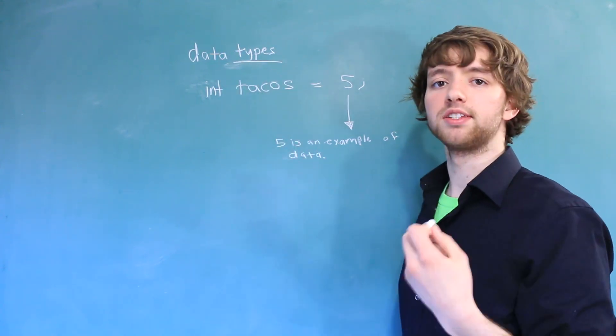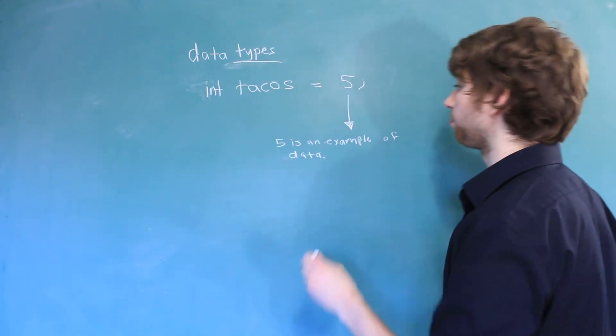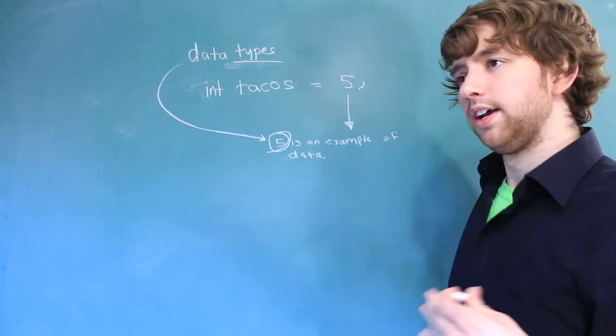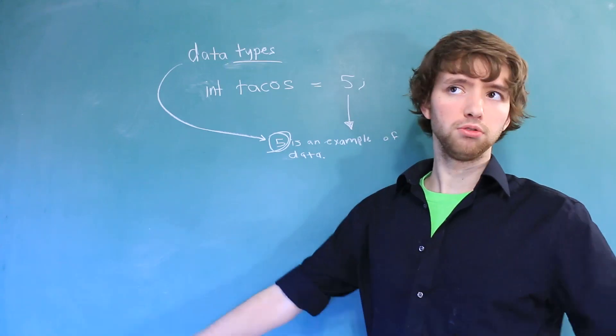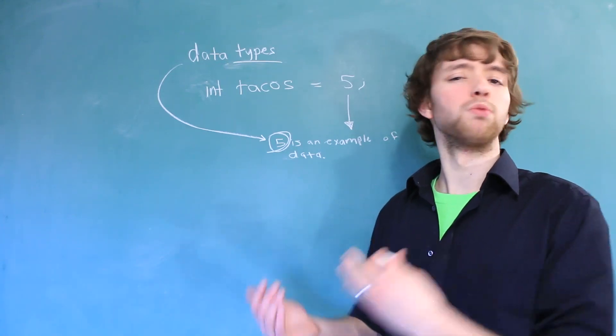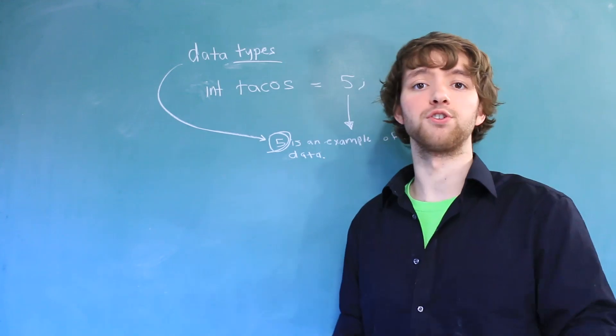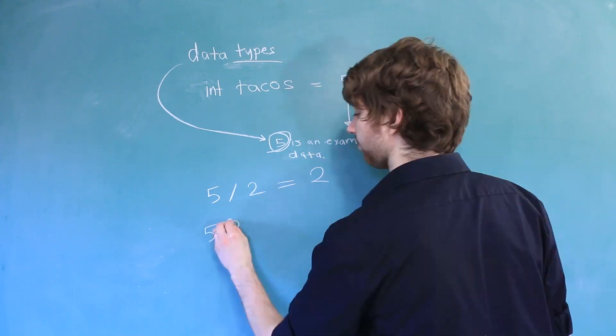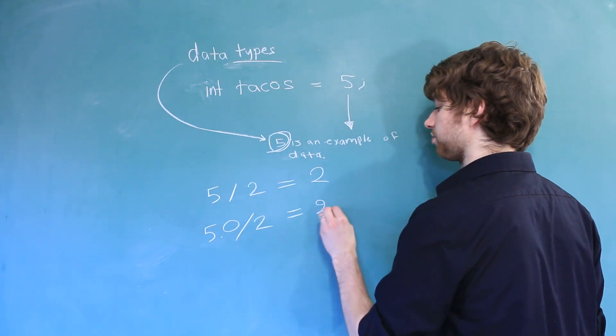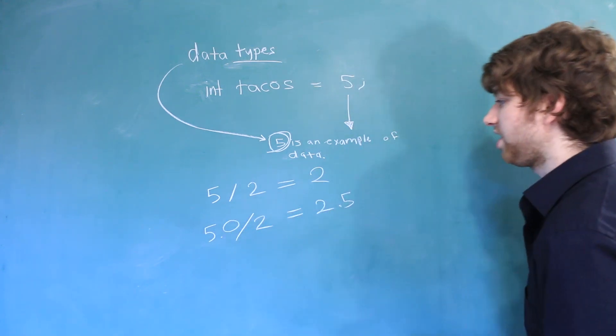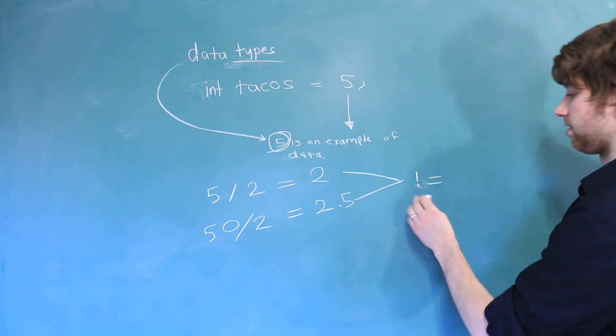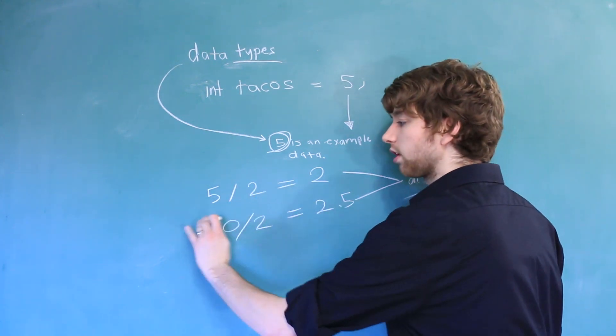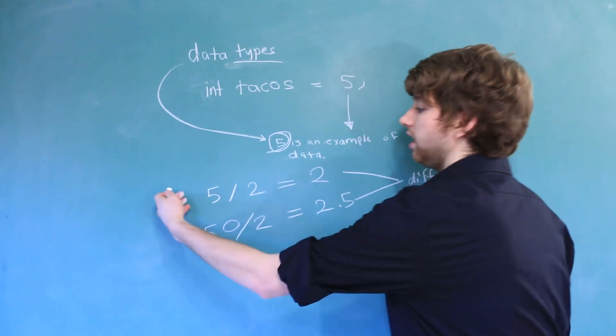Now the data type tells the computer how to interpret this data. And it seems kind of odd, like doesn't the computer just know? Well, actually not. For example, when we're working with integer division versus double division, 5 divided by 2 equals 2, but 5.0 divided by 2 equals 2.5. You can see that we get two completely different results. These are not equal.